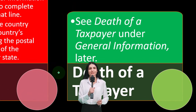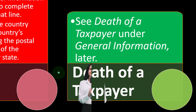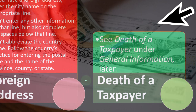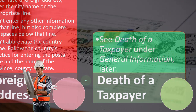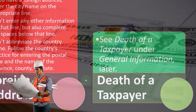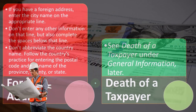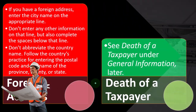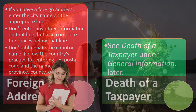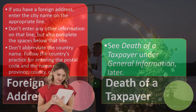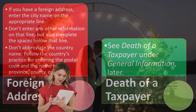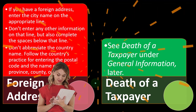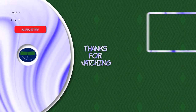Death of a taxpayer: see 'death of a taxpayer' under general information later. If you're married filing joint and the taxpayer dies mid-year, you would generally file married filing joint for that year, and that would typically be the final return for the taxpayer. After that year, you determine what happens going forward with the surviving spouse's filing status.